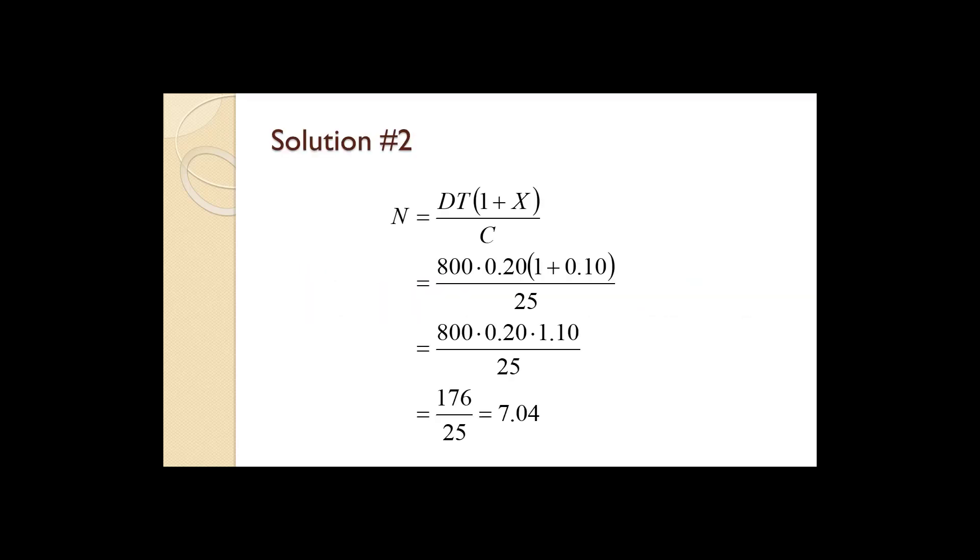The number of containers required equals 800 times 0.20 times the quantity 1 plus 0.10 all divided by 25. That all works out to 7.04. Rounding this down to 7 will result in a system that is slightly tighter.